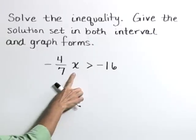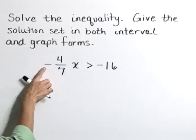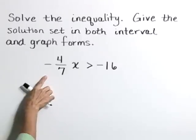We want to isolate x, and I'm going to do that by multiplying both sides by the reciprocal of negative 4 sevenths, which is negative 7 fourths. Here we go.